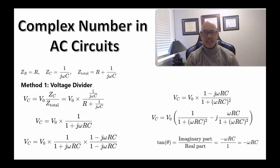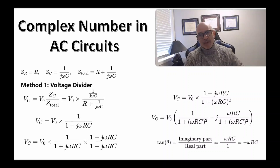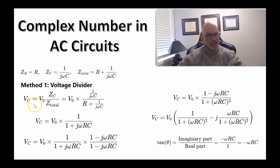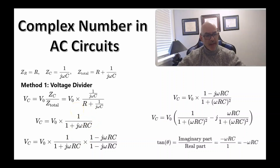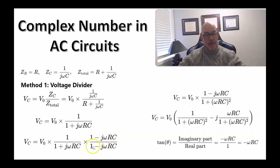Complex numbers are used to calculate the phase angle, which is very important in AC circuits. The actual calculation is not the main focus here. On the previous slide, the voltage across the capacitor had a complex number in the denominator. To get the phase angle, you need to put the complex number in the numerator by rationalizing the denominator — multiplying top and bottom by the complex conjugate, 1 minus j·omega·RC. This makes the denominator a real number equal to 1 plus (omega·RC)².